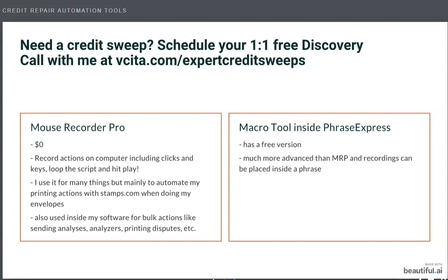Another way I use it is when printing envelopes with Stamps.com on my desktop. I'll record myself printing one set of envelopes — say for Experian — and then if I want 20, 50, or 100 printed, I just loop it that many times. This lets your computer's 'ghost fingers' do the work while you set up for the next thing, take a call, get a coffee, or talk to your spouse. It's really cool because it's so simple.